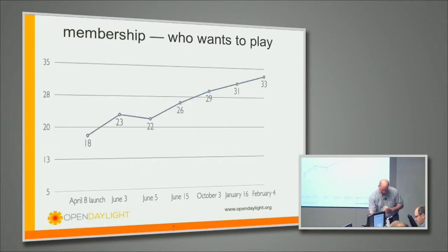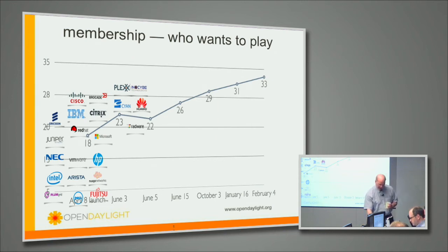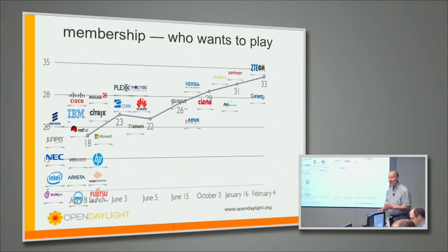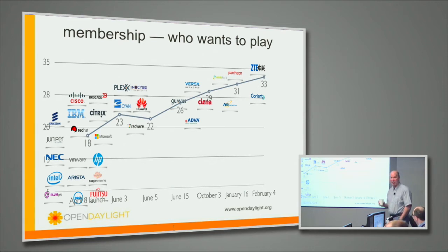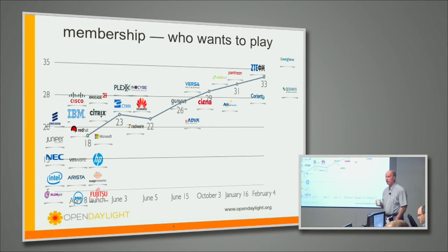The membership tracked the projects too — it went up and to the right, more people joining all the time, which I think is good. Some of the newest members include Contxt Stream, who were one of the first to do a LISP-based NFV thing — they use LISP as an encapsulation to do traffic steering.